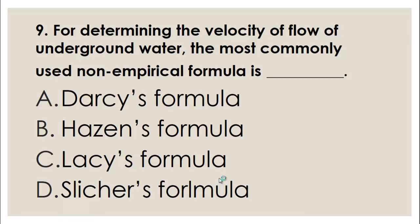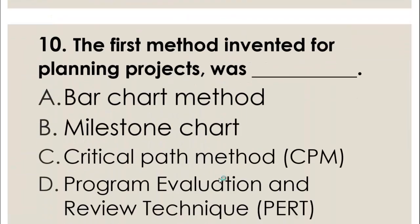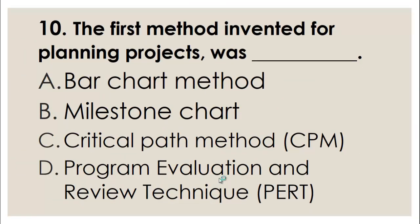MCQ number nine: For determining the velocity of flow of underground water, the most commonly used non-empirical formula is — A) Darcy formula, B) Hazen formula, C) Lassis formula, D) Sletcher formula. The most commonly used formula for underground water velocity is A, Darcy's formula.